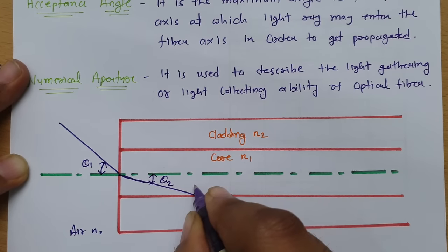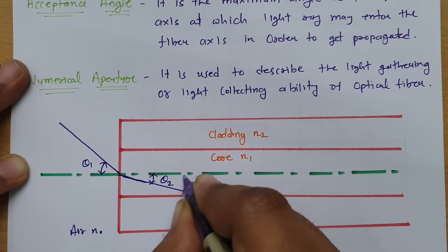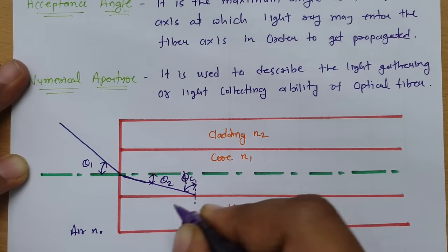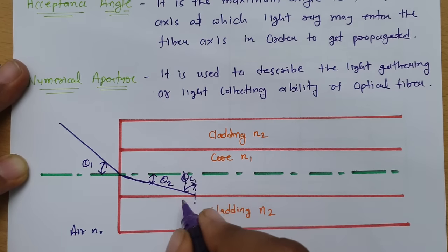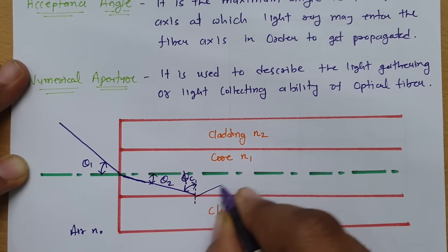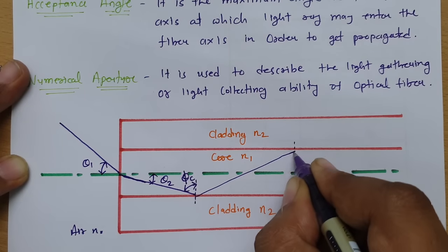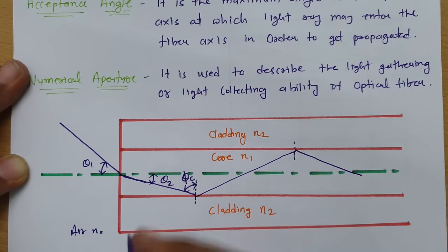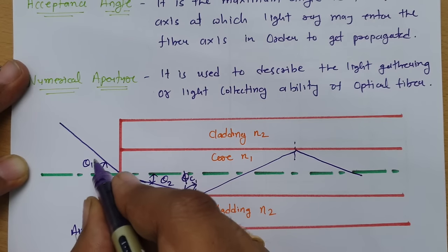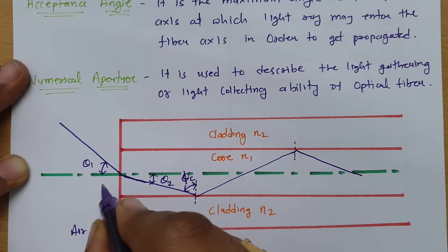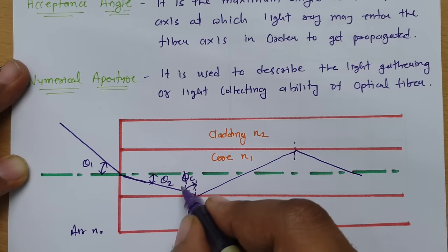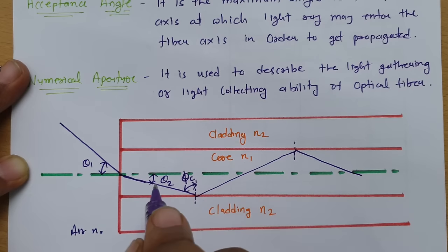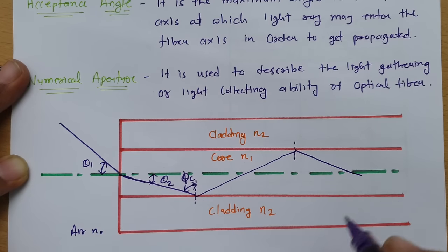Total internal reflection will happen only if this angle is greater than the critical angle phi_c. So if this angle is greater than the critical angle, there will be total internal reflection, and that is how the signal will get propagated. If we insert the signal at theta1 such that this angle equals the critical angle phi_c, the signal will get propagated through the optical fiber.